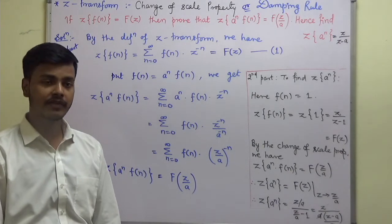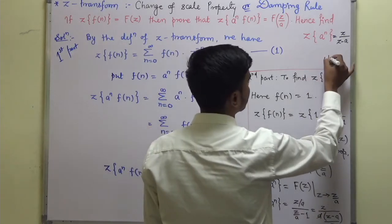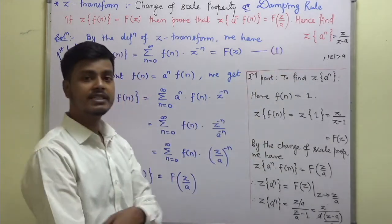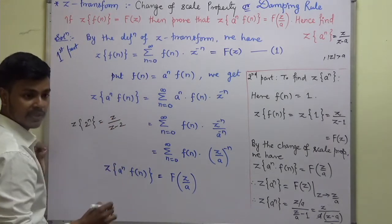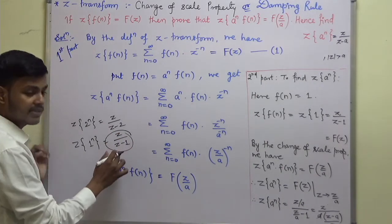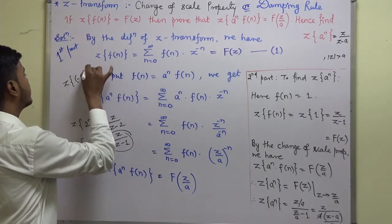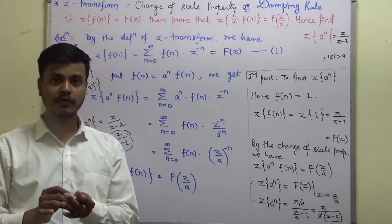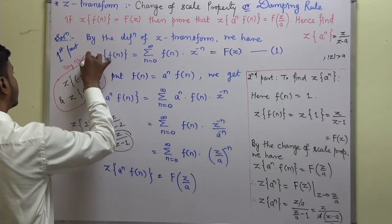The result is: Z-transform of a^n equals z/(z-a), where the modulus of z should be greater than the modulus of a. For example, Z{2^n} = z/(z-2), and Z{1^n} = z/(z-1), which we have already seen as the very first elementary result. Now try to find the Z-transform of (-1)^n, Z{(-3)^n}, or in general Z{(-a)^n}.